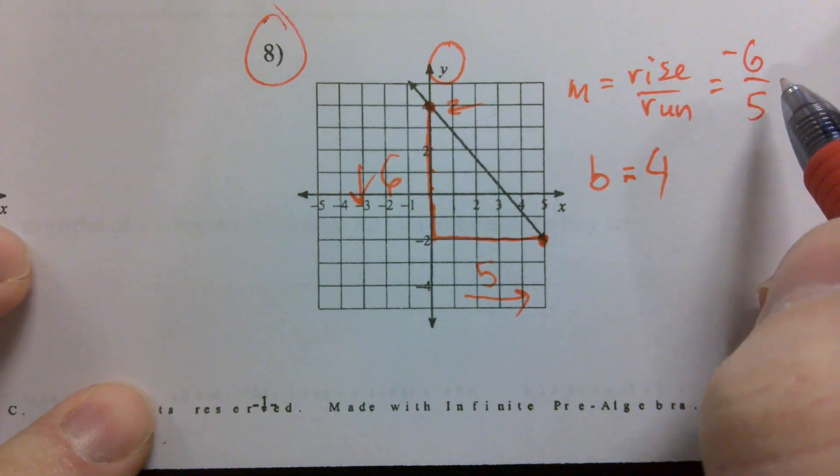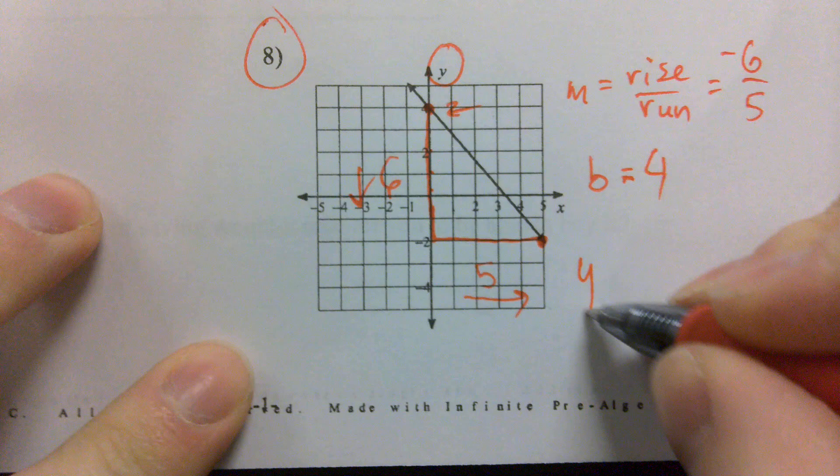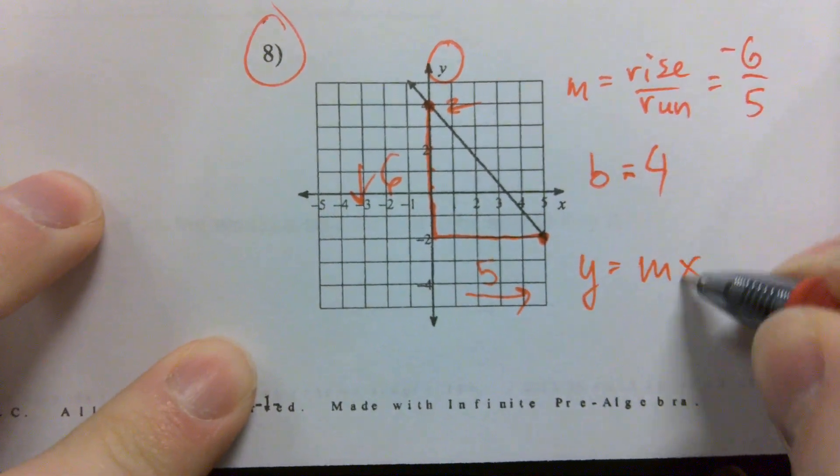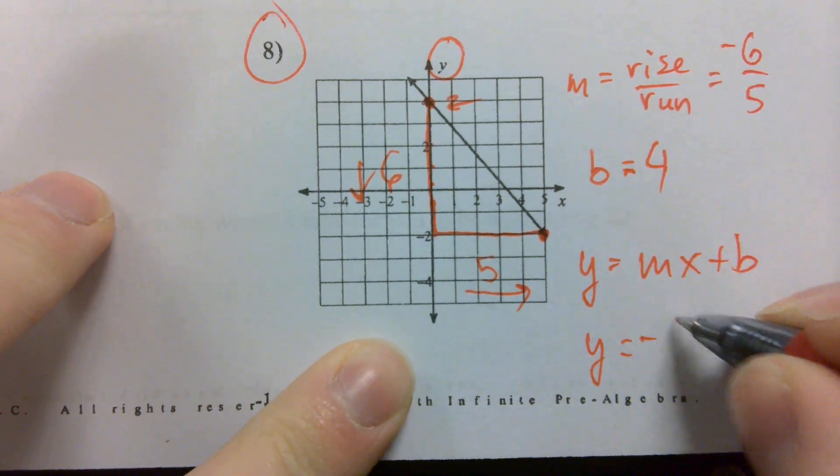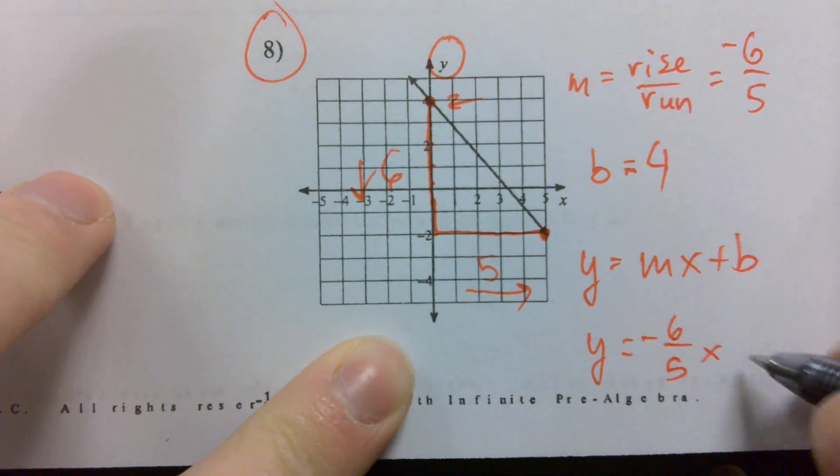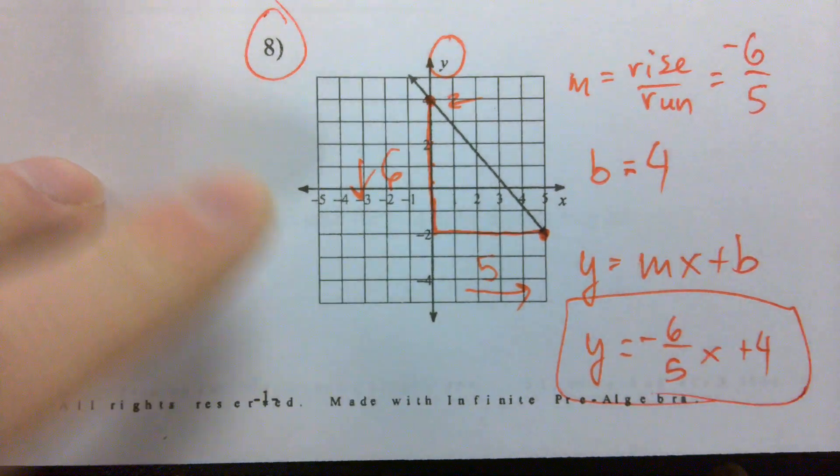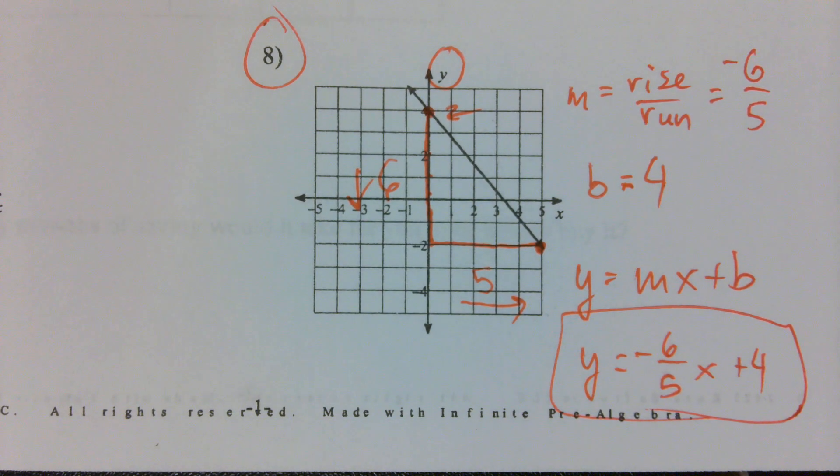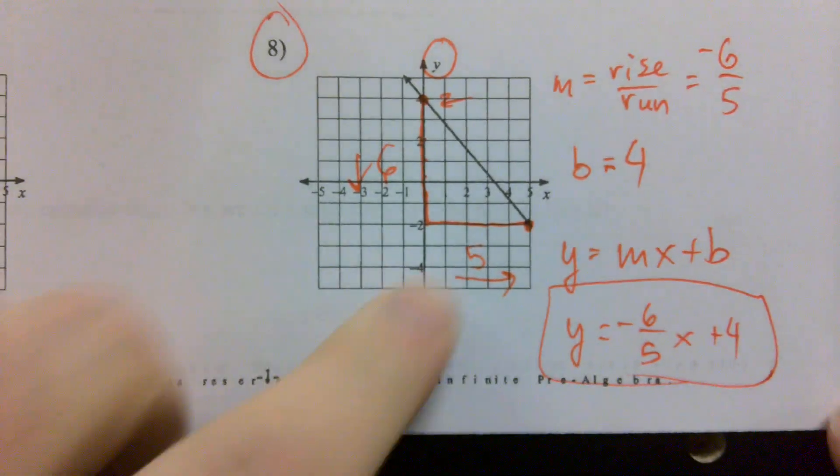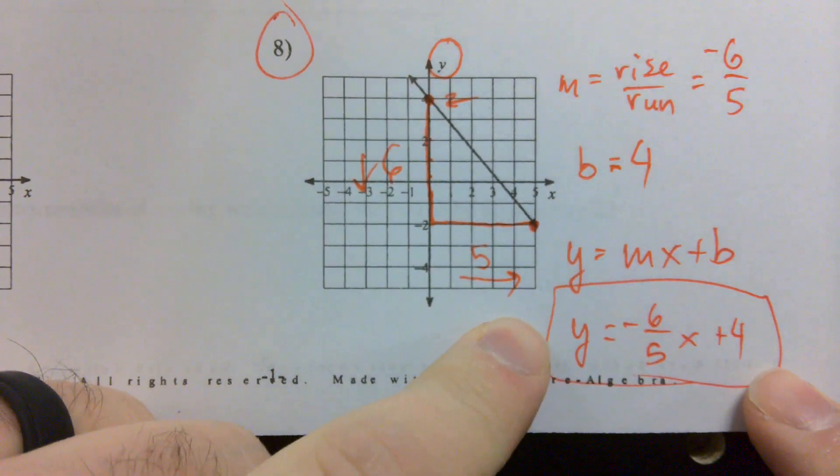We've got our M, we've got our B. We know that y is equal to mx plus B. So this equation is going to read y is equal to negative six over five x plus four. Just like that. Perfect. We're going over it right now. Anyone get that equation there for number eight? Negative six over five plus four.